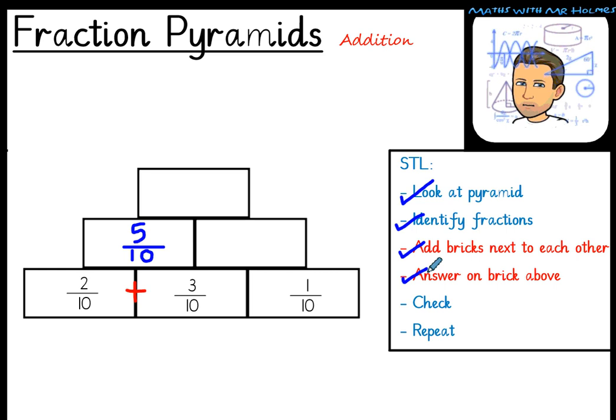And like every good mathematician, we check. So two tenths add three tenths is five tenths. Or we could use the inverse. The inverse of addition, that's right, is subtraction. Five tenths take away three tenths will give us two tenths. Excellent.